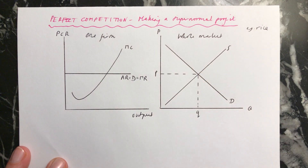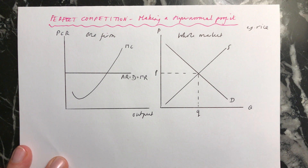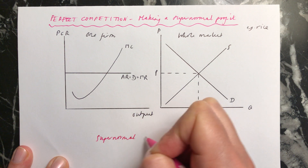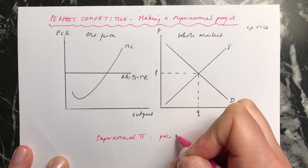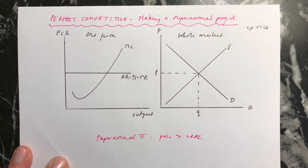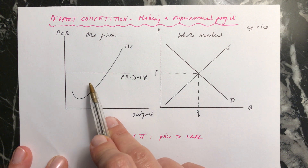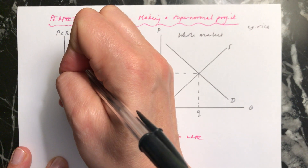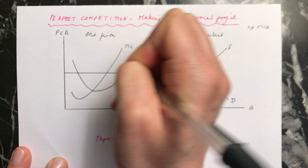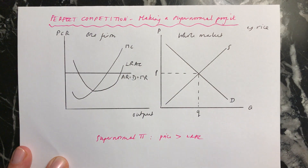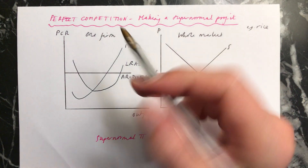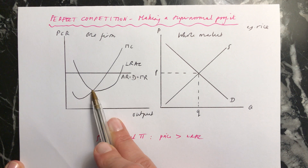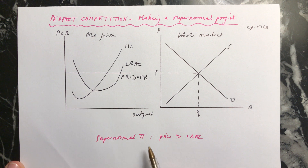Now we want to show a supernormal profit. If we have a supernormal profit, we know that the price is going to be greater than the long run average costs. So let's engineer this diagram so that we're making a supernormal profit. If I put my long run average cost curve down here, we will be making a supernormal profit. Remember that the lowest point of the long run average cost curve needs to cut through the marginal cost curve.